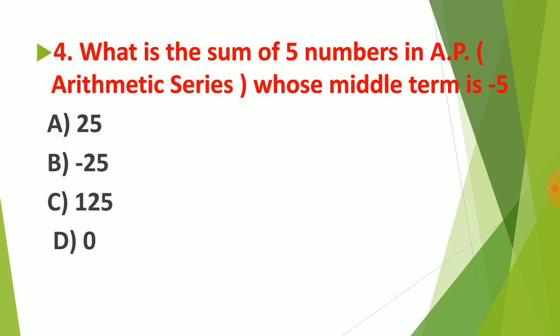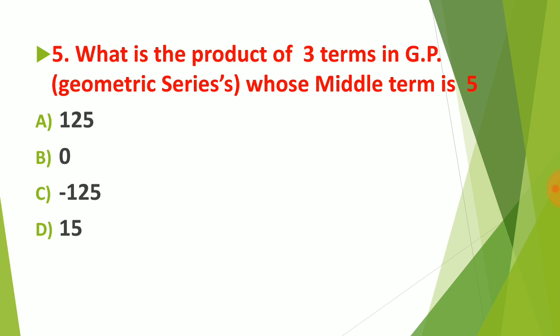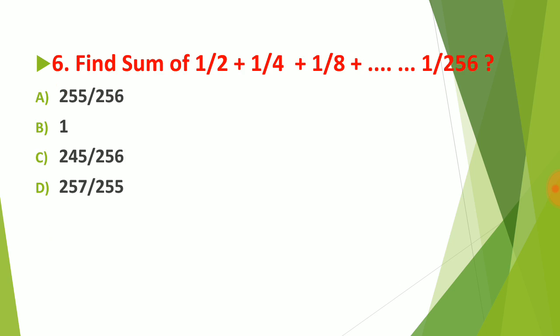Question 4: Find the sum of five numbers in AP whose middle term is −5. This is also a task for you — try to solve it. Question 5: Find the product of three terms in GP whose middle term is 5. Question 6: Find the sum of the given series where the last term is provided — identify the series type, apply your formula, and comment your answer.